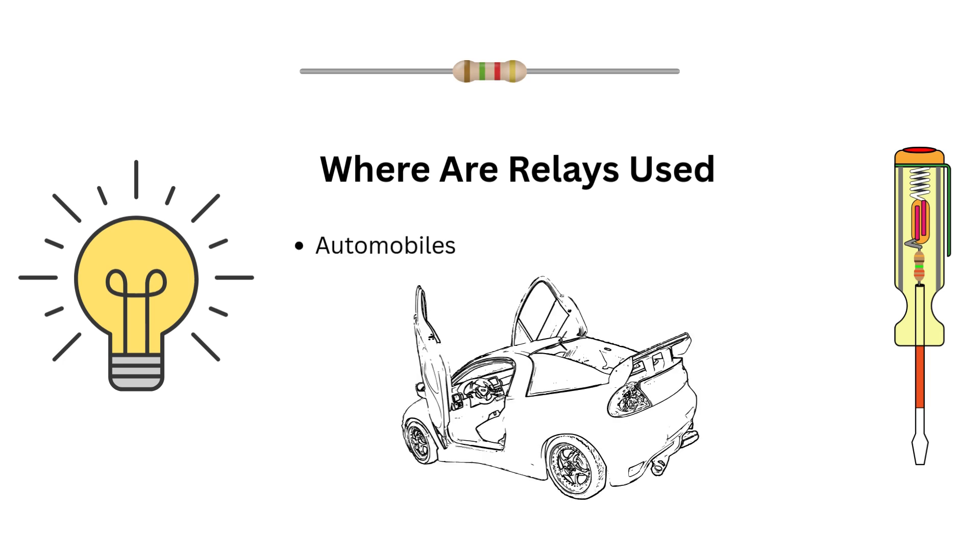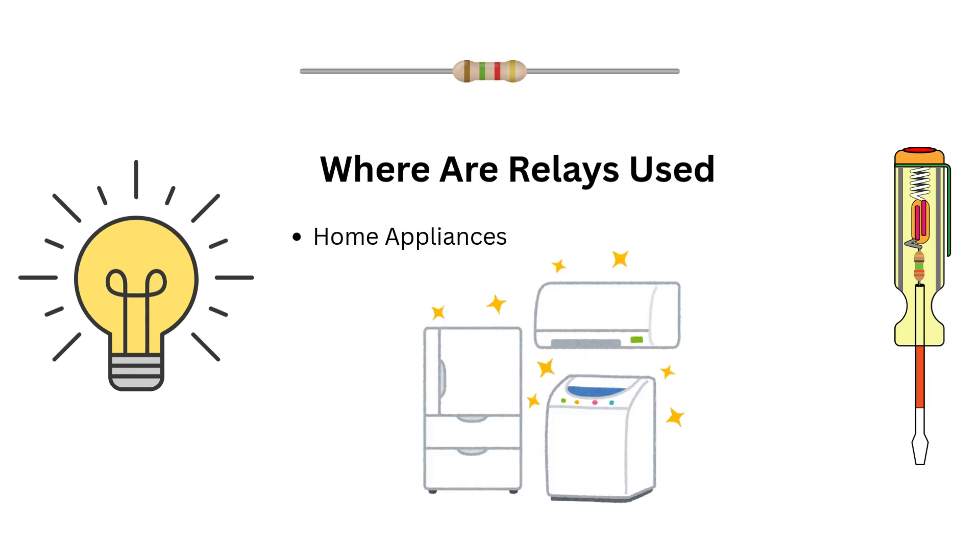You will find them in automobiles, controlling headlights, wipers, and ignition systems. Home appliances, found in washing machines, refrigerators, and air conditioners.